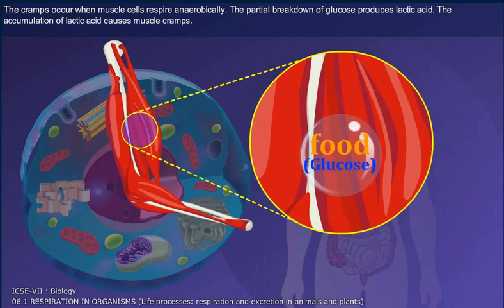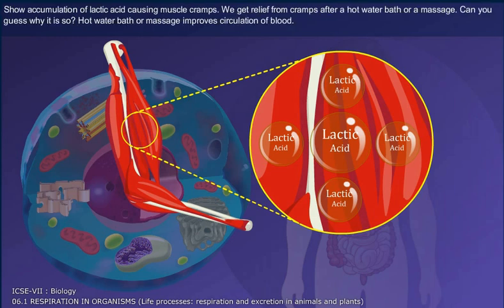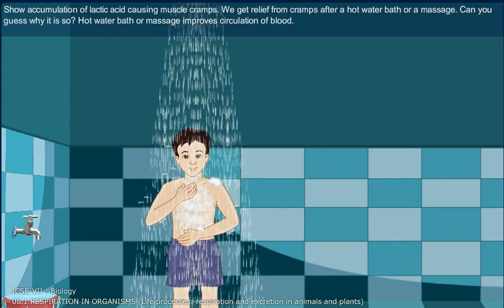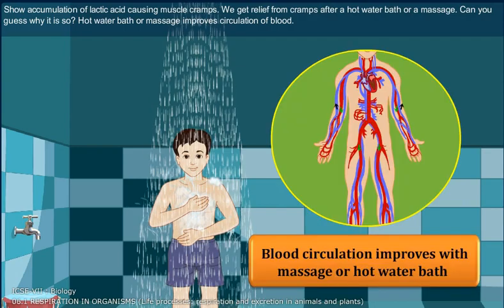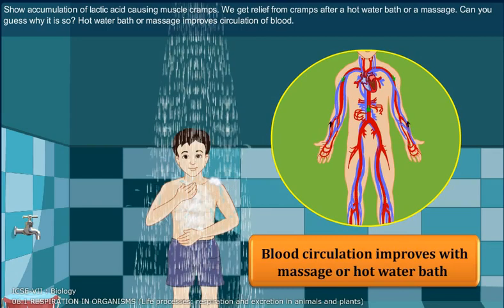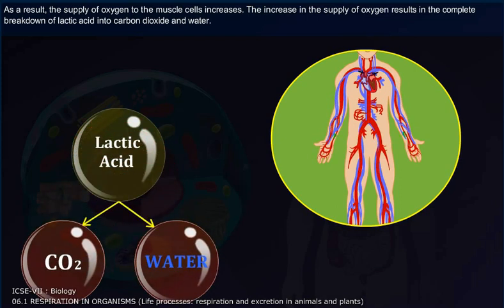The partial breakdown of glucose produces lactic acid. The accumulation of lactic acid causes muscle cramps. We get relief from cramps after a hot water bath or a massage. Hot water bath or massage improves circulation of blood. As a result, the supply of oxygen to the muscle cells increases, which results in the complete breakdown of lactic acid into carbon dioxide and water.